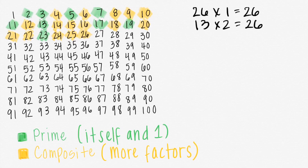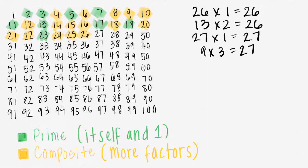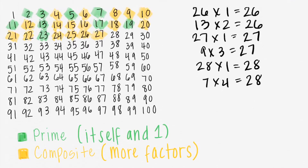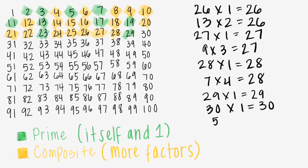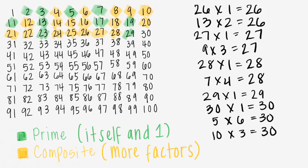27 times 1 equals 27, so 27 is composite. 28 times 1 equals 28, but 7 times 4 equals 28, so 28 is composite. 29 times 1 equals 29, and there's no other way to get 29, so 29 is prime. 30 times 1 equals 30, but 6 times 5 equals 30, and 10 times 3 is also 30. That means that 30 is composite.